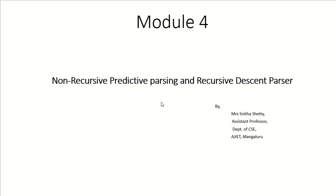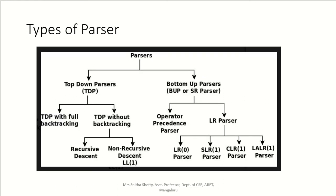In the previous session, we started with parser classification. The parser is classified into two types: top-down parser and bottom-up parser. Top-down parser is further divided into two types: top-down parser with full backtracking and top-down parser without backtracking. Under without backtracking, it is further classified into recursive descent parser and non-recursive descent parser. LL1 is a non-recursive descent parser.